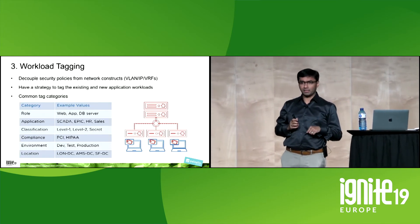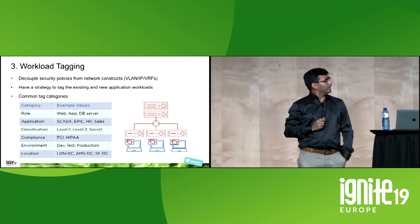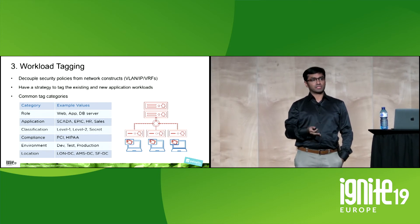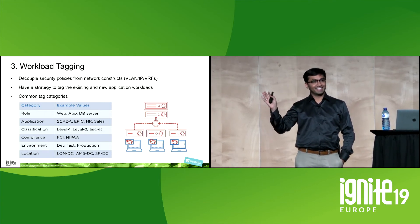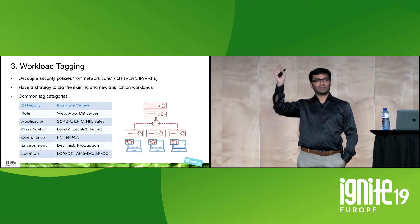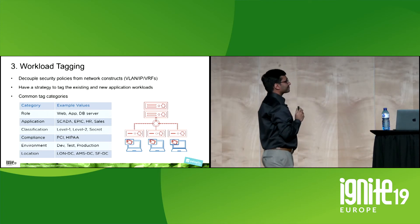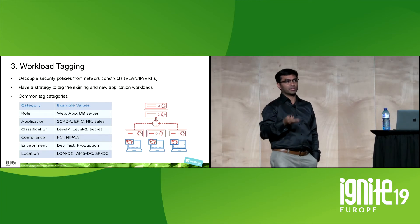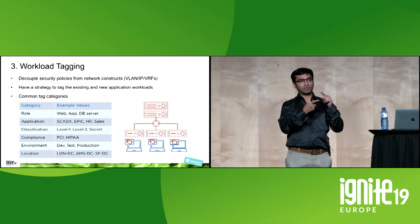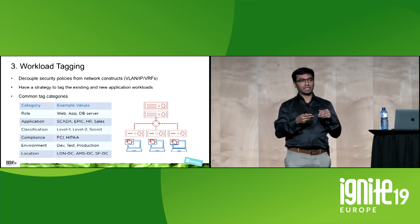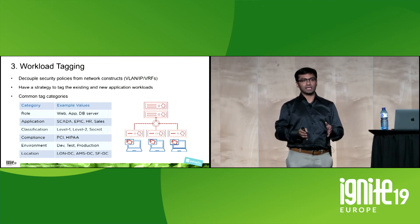Workload tagging is the third fundamental piece. You must have a process for workload tagging. How many have all workloads tagged today beyond IP address? About 2% of you. Definitely have a strategy to tag existing and new workloads. Customers typically tag across four to six categories: role, application, location, environment, classification, and compliance. For any VM workload your application team is spinning out, do not have more than four to six tags per VM, but mandate the tagging as part of your strategy.